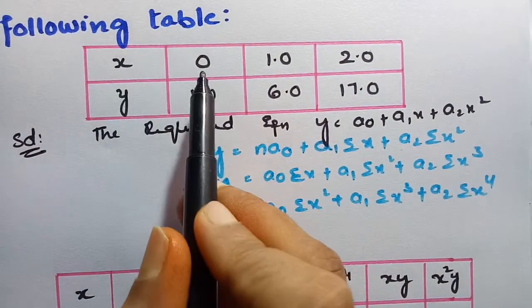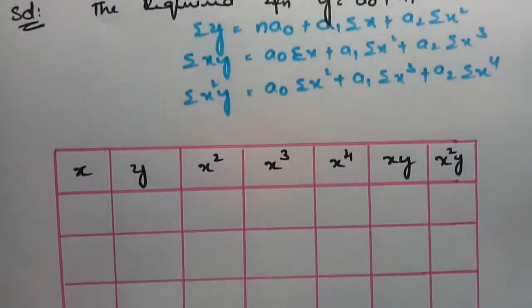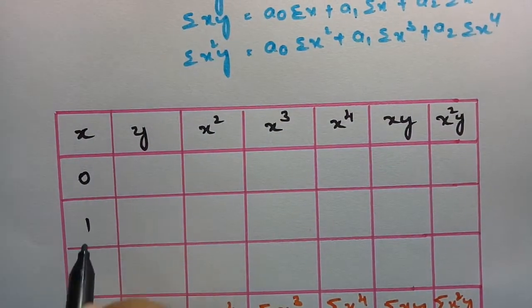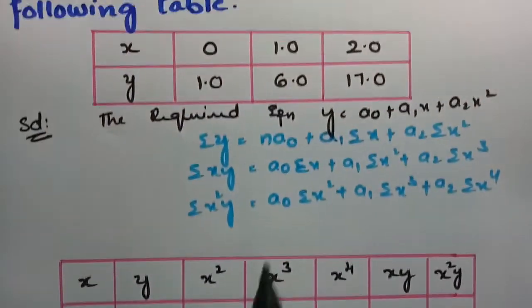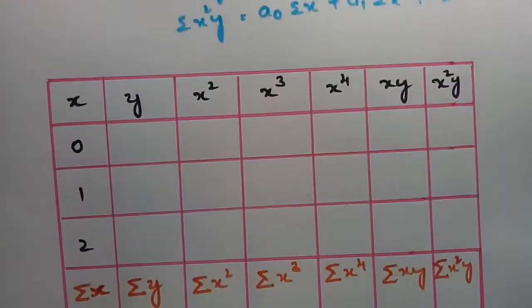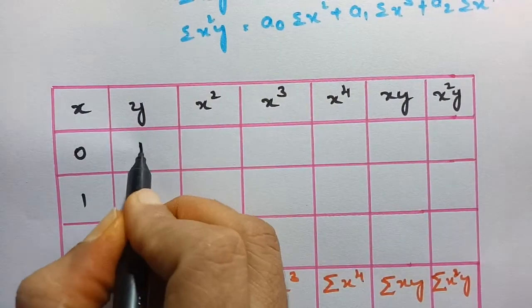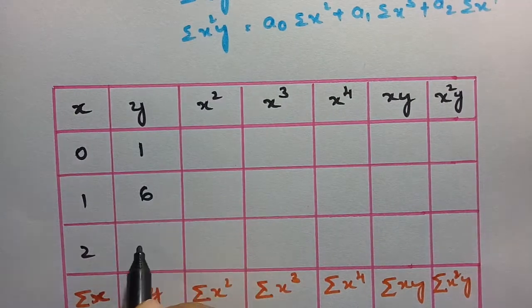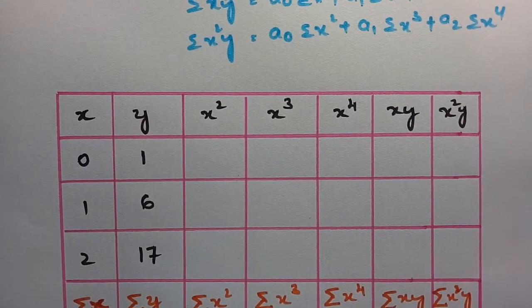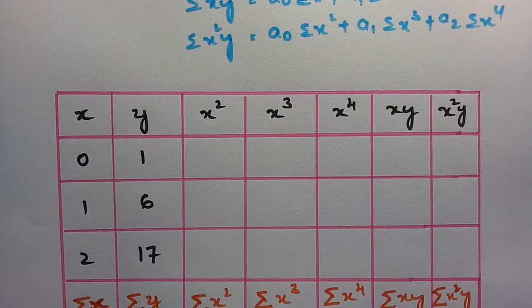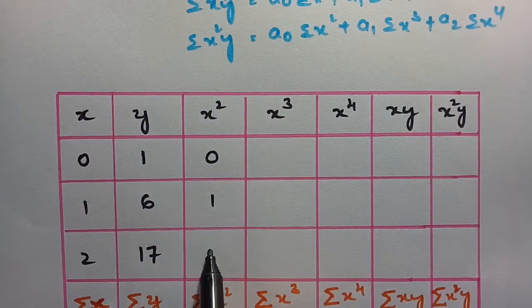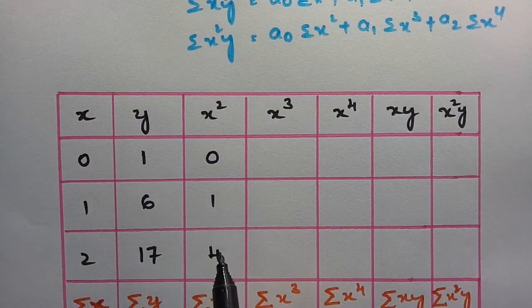The x values are 0, 1, and 2. The y values are 1, 6, and 17. Now we square all the x values: 0² = 0, 1² = 1, and 2² = 4.